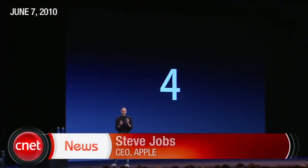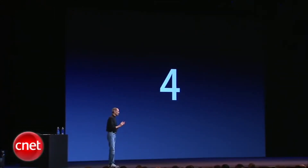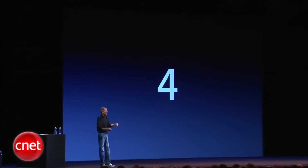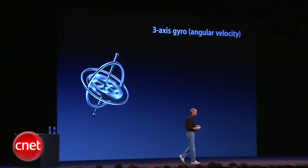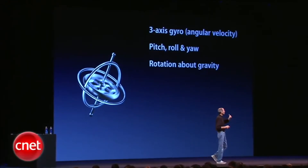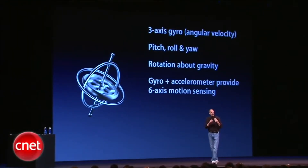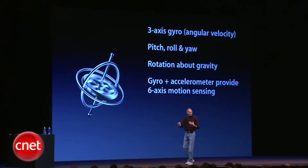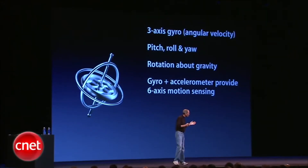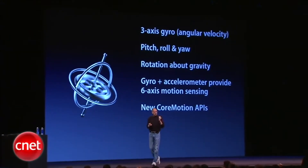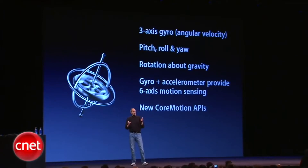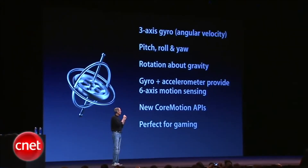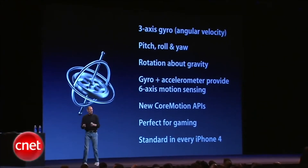[Steve Jobs]: 'We've got another really cool piece of hardware. Remember when we added the accelerometer and how that opened up a whole new vista of gaming? We're adding a gyroscope — a three-axis gyro, which is fantastic. Pitch, roll, and yaw. Also rotation around gravity. And we tied the gyro and the accelerometer and even the compass together to provide six-axis motion sensing. We've got new core motion APIs that give you extremely precise position information. It's perfect for gaming, and it's built into every iPhone 4.'